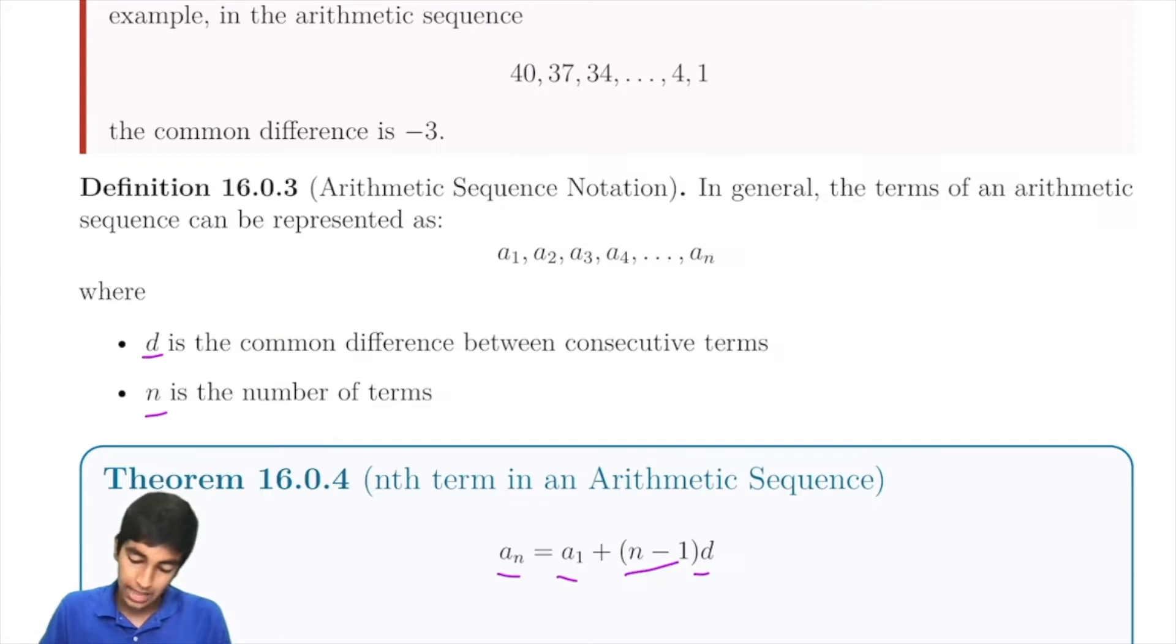And the nth term based on the mth term is just the number of terms in between those two terms, n-m, times d.